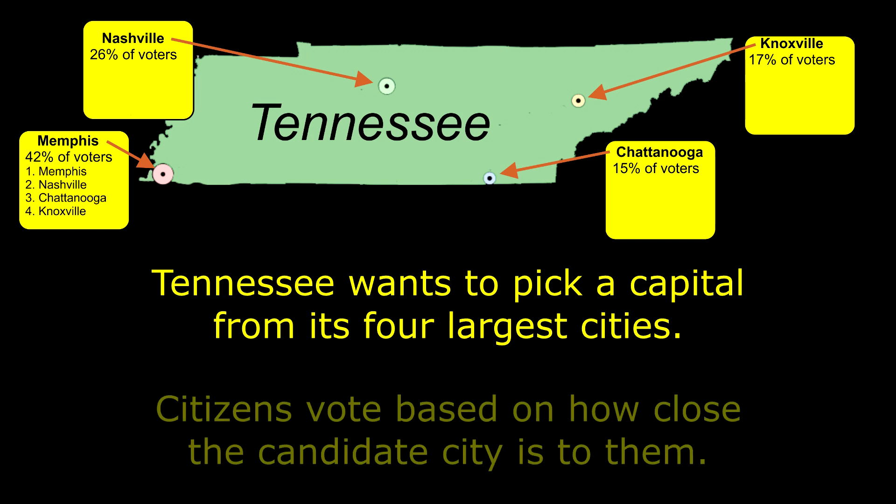Thus, their first choice is the closest city, their second choice is the second closest, their third choice is the third closest, and their fourth choice is the city furthest from them. The map shows how the voters in each area rank the candidate cities.